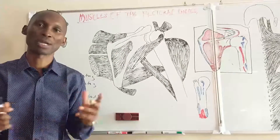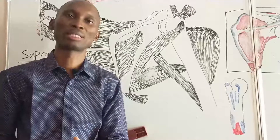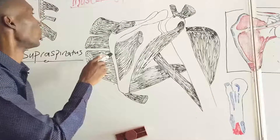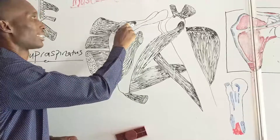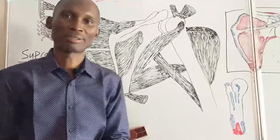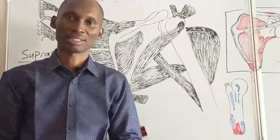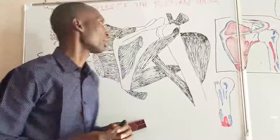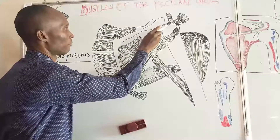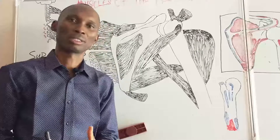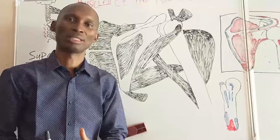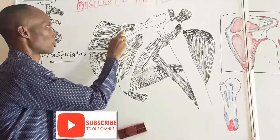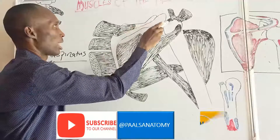The supraspinatus is the muscle found in the supraspinous fossa. It takes origin from the medial two-thirds of the supraspinous fossa and then gets inserted into the greater tubercle. The greater tubercle has three facets: the superior facet, the middle facet, and the inferior facet. The supraspinatus inserts into the superior facet of the greater tubercle of the humerus. This is the cut edge of supraspinatus and that's the cut edge showing the insertion.